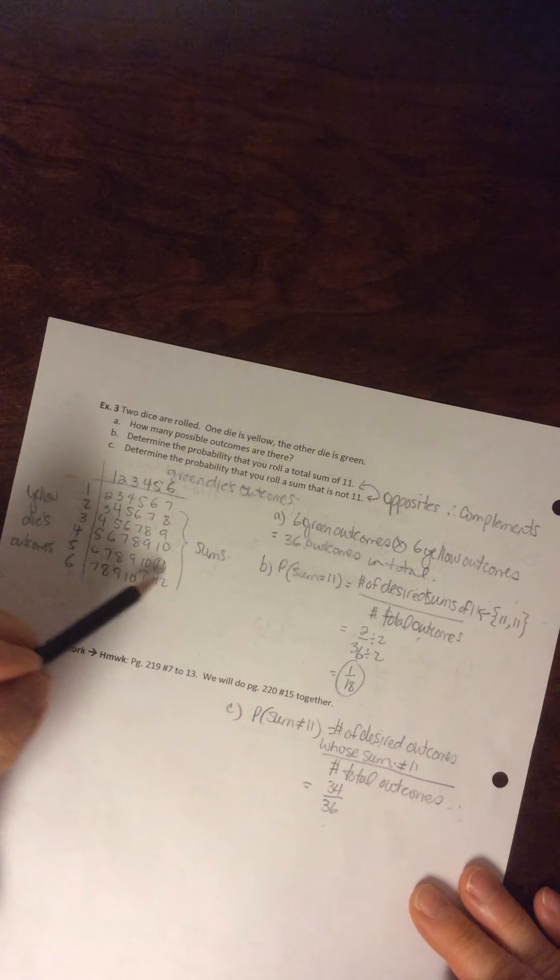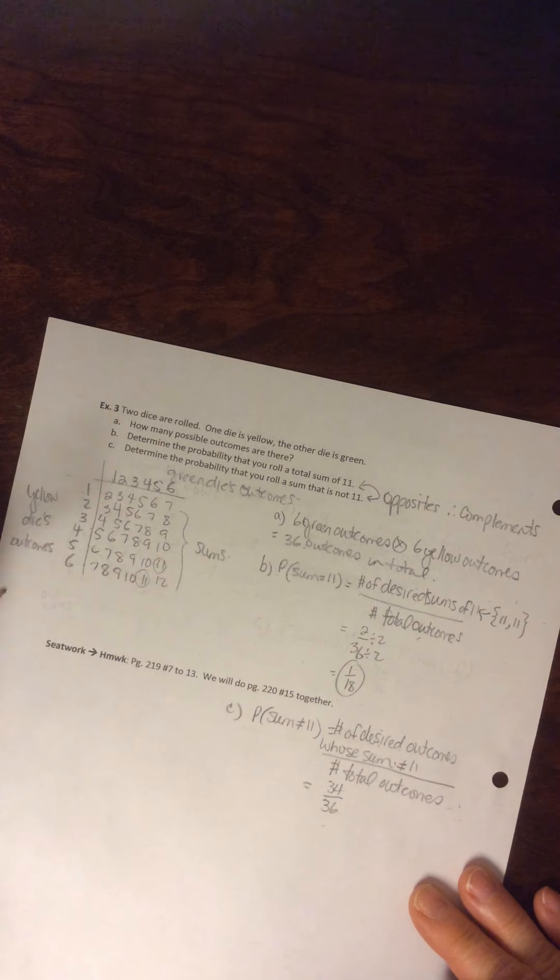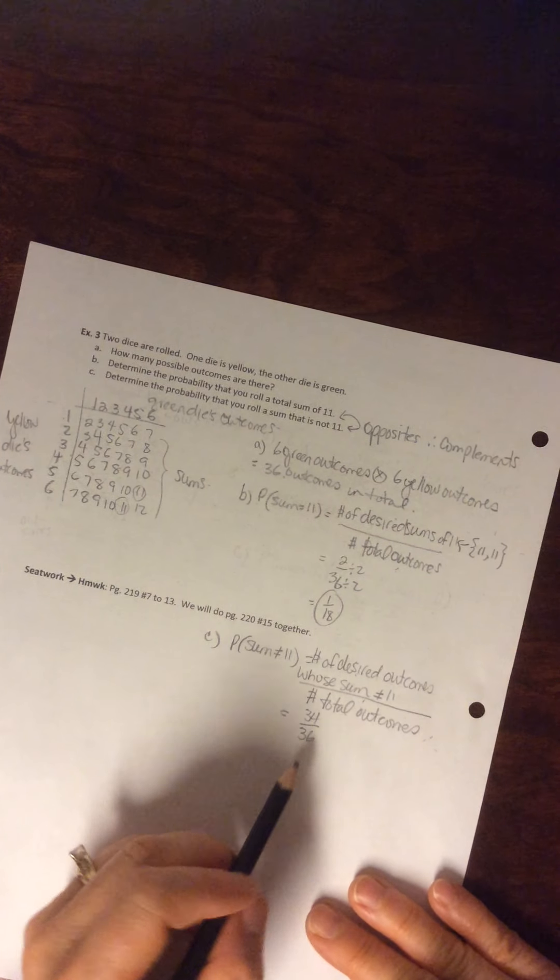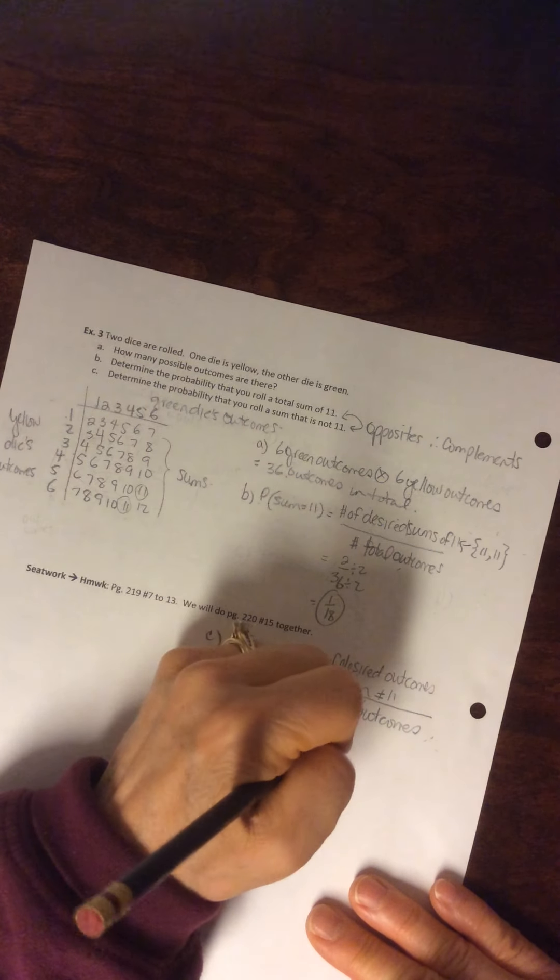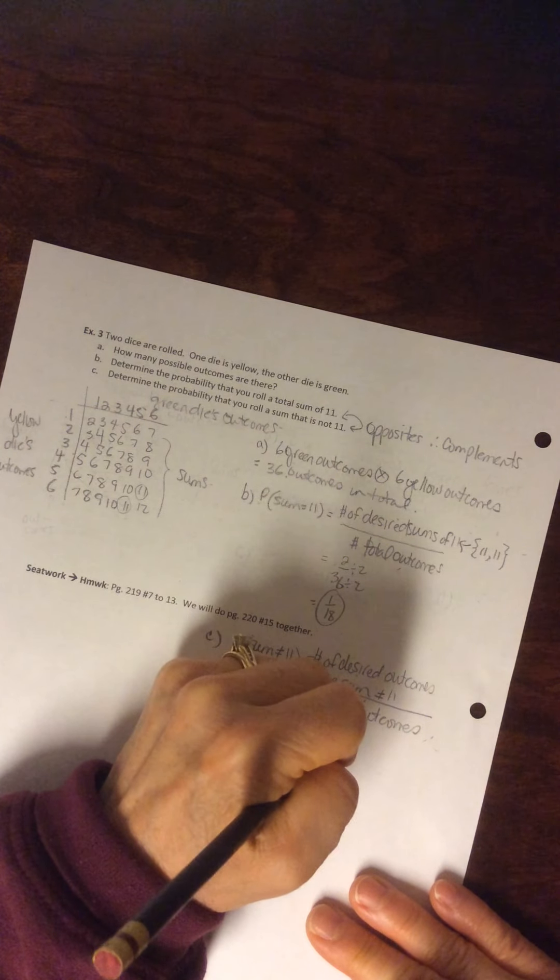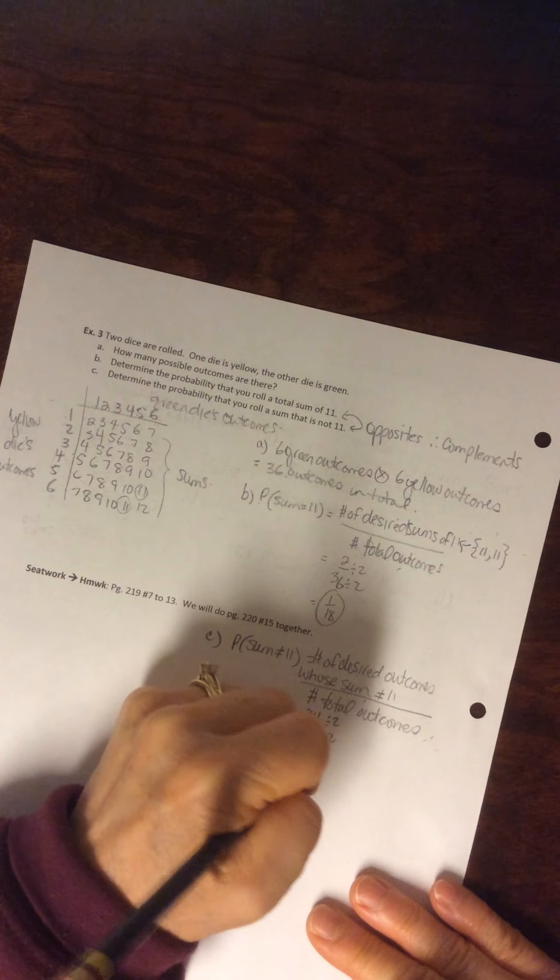Now, if you subtracted 36 minus the 2, you're already using the complement without realizing it, okay? So this is what I'll show you. So you could reduce this, divide by 2, so you can get 17 out of 18.